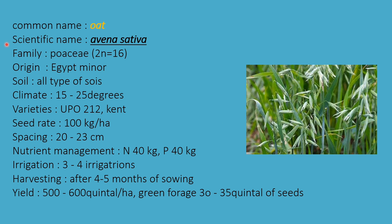The last forage crop is oat. Scientific name is Avena sativa, family Poaceae. Chromosome number 2n = 16, origin Egypt. All types of soils are suitable; climate 15 to 25 degrees. Varieties are UPO 212 and Kent. Seed rate is 100 kg per hectare, spacing 20 × 23 cm. Nutrient management: nitrogen 40 kg and phosphorus 40 kg, with phosphorus applied in basal doses. Irrigation 3 to 4 times. Harvesting after 4 to 5 months; yield 500 to 600 quintals per hectare with 30 to 35 quintals of seeds.